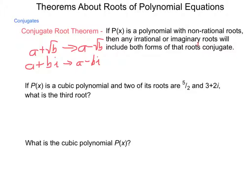Example, if P(x) is a cubic polynomial and two of its roots are 5/2 and 3 + 2i, what is the third root? Well, based on the conjugate root theorem, we have to have the complex conjugate of 3 + 2i. So, that last root would be 3 - 2i. Then the follow-up, what is the cubic polynomial P(x) that has these features? Well, we know that its factors are x - 5/2, x - (3 + 2i), and x - (3 - 2i). So, we can simplify this first one, getting rid of the fraction. This becomes 2x - 5.